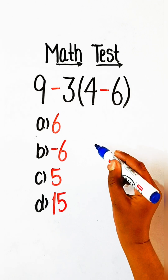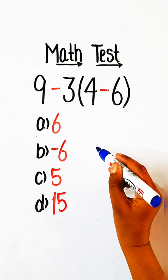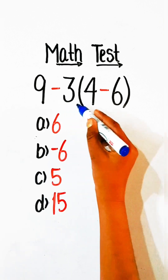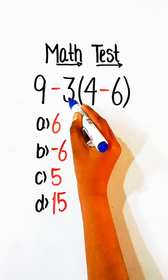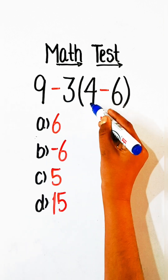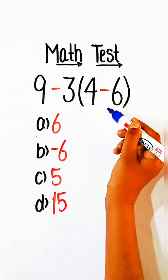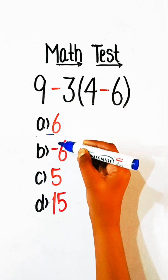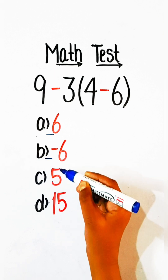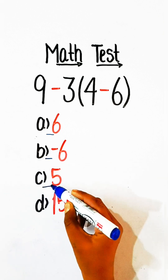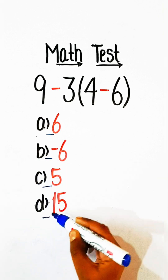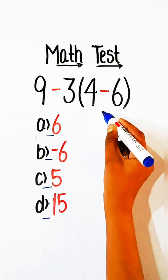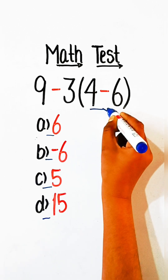Hello everyone, welcome back to my YouTube channel. In this video we will solve this basic math problem: 9 minus 3 under bracket 4 minus 6 equals what? Option A: 6, Option B: minus 6, Option C: 5, Option D: 15. So let's solve this — here we have to solve the bracket part first.